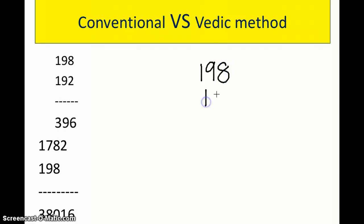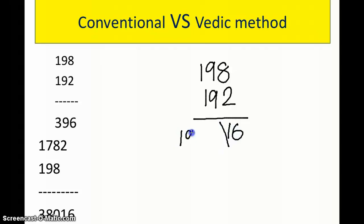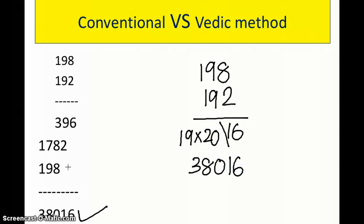For 198 × 192, the unit digits 8 and 2 sum to 10, so we multiply them: 8 × 2 = 16. The remaining part is 19, and the next number is 20, so 19 × 20 = 380. The answer is 38016.